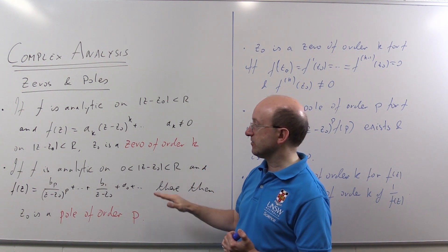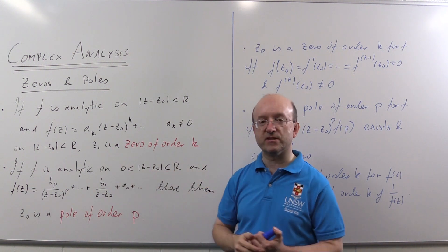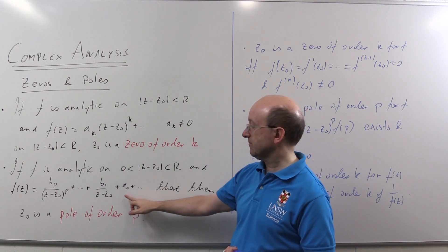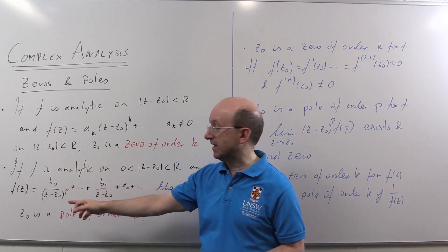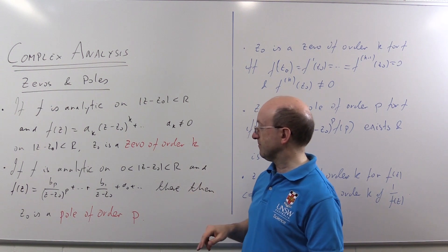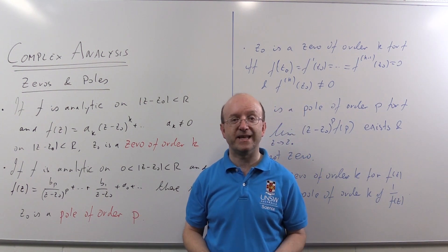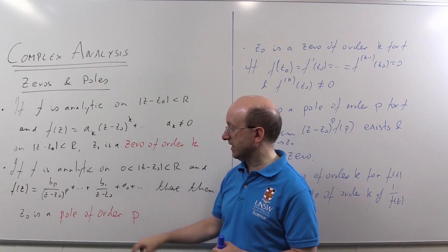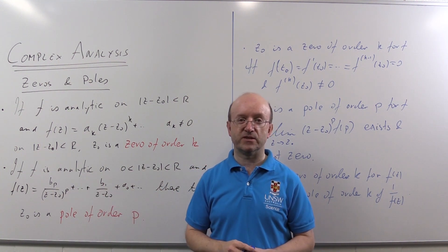On the other hand, if we have an analytic function on a punctured disk — so 0 < |z − z₀| < r — which means from Laurent's theorem we can write it in terms of a Laurent series. Suppose the series begins with the lowest power b_p over (z − z₀)^p, and so on to higher powers, then we refer to z₀ as a pole of order p. So a zero of order k has a series beginning at z^k, and a pole of order p has a series beginning basically at 1/(z − z₀)^p.